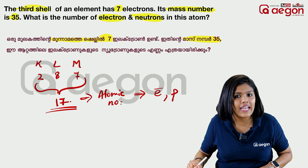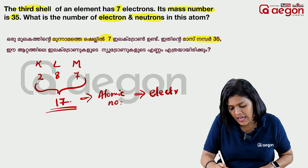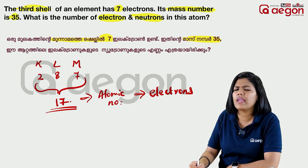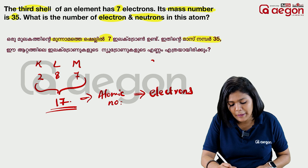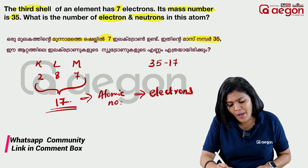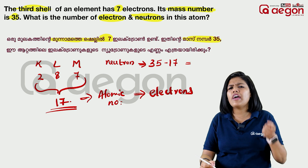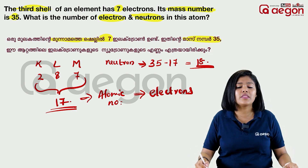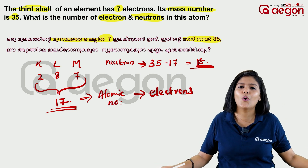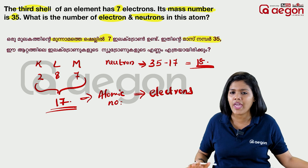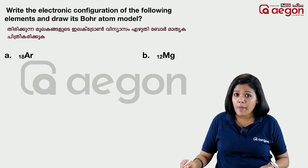What are the electrons? The number of electrons equals the number of protons, which equals the atomic number. To find neutrons: neutrons equal mass number minus atomic number, so 35 minus 17 equals 18 neutrons. The atomic number is 17.